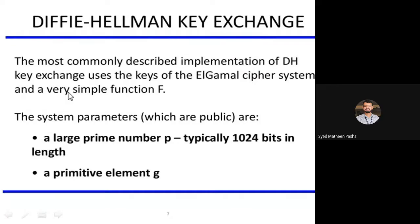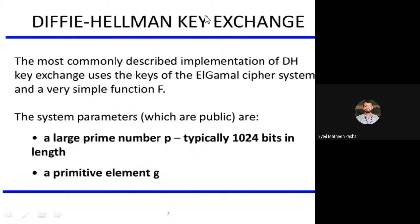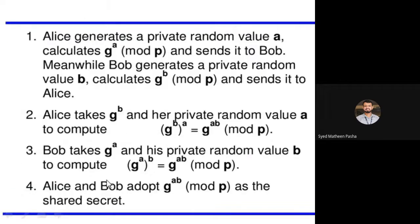What are the system parameters you need to remember with respect to Diffie-Hellman key exchange? The system parameters which are public are: a large prime number P, and a primitive element G. These are the two parameters you should remember — P as well as G — whenever you are doing a key exchange.